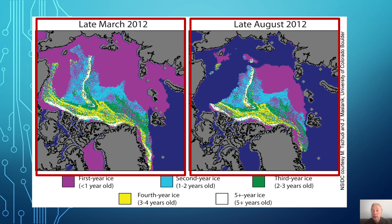Thick multi-year sea ice only grows where slabs of ice pile on top of one another, especially where ice slabs are pushed against the northern Greenland coast and the Canadian islands. As represented by non-purple colors, that is where the thickest four-year-old and older ice is maintained. And the bulk of that multi-year ice is largely unaffected between winter and summer temperatures.